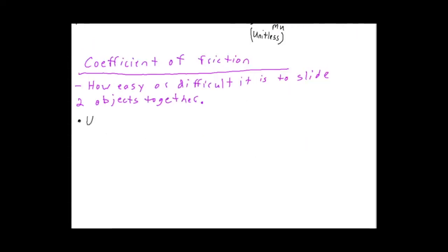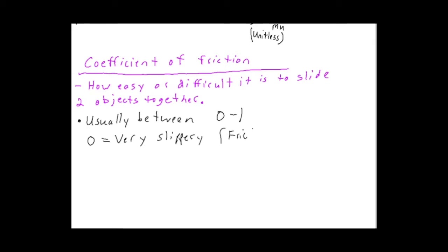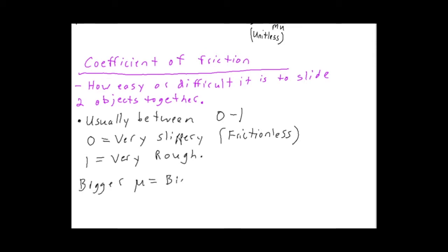The coefficient of friction is going to tell us how easy or difficult it is to slide two objects together. Mu is usually a number between 0 and 1. Zero means those two surfaces are very slippery — 0 would be a frictionless surface, like ice in physics. One, on the other hand, would be a very rough surface, like sandpaper on sandpaper.